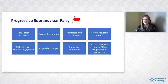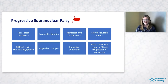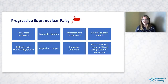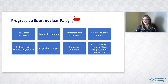For PSP, one of the early red flags is falling — often people report falling backwards, which you wouldn't expect to see with Parkinson's — along with postural instability and being more unsteady on their feet. Restricted eye movements are a classical sign: upward and downward gaze can be altered along with reduced blink rates. People often report double vision or difficulty with vision and may have quite a fixed stare to their facial expression. They may also have slowed or slurred speech and difficulty swallowing.